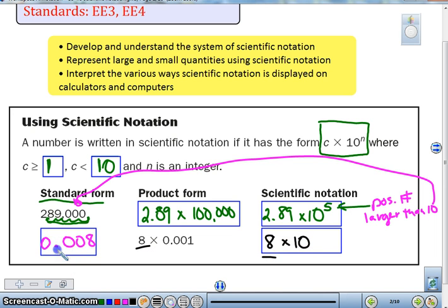And we need to think, oh, 1, 2, 3 places. But since it's a small number, it can't be a positive 3. This must be a negative 3. So as we look at that, the key thing is that this will be a negative number.